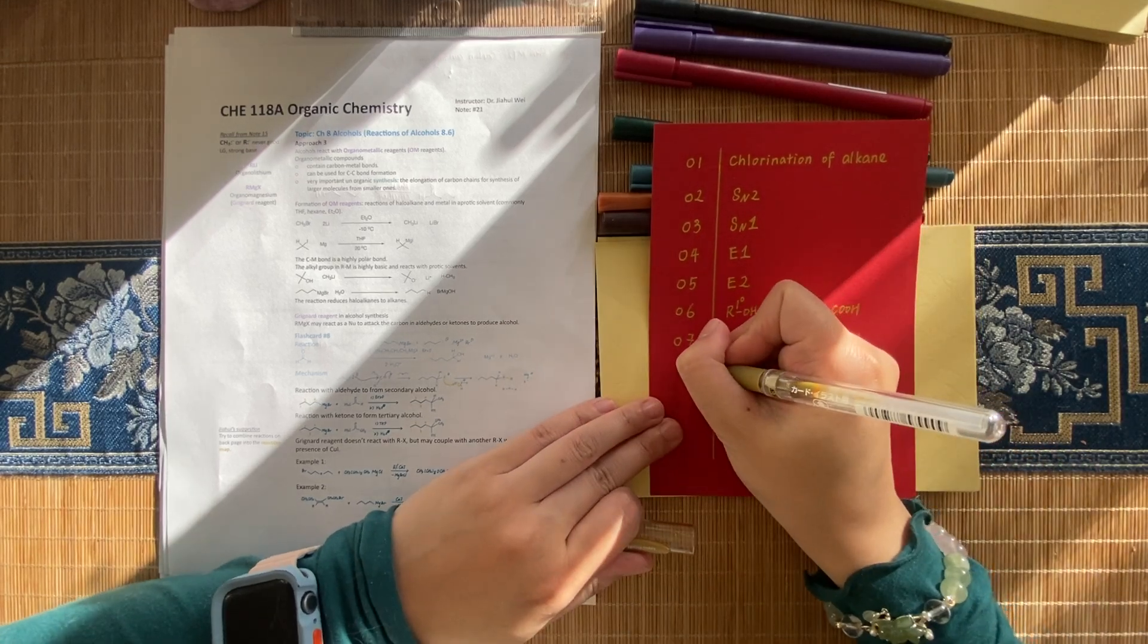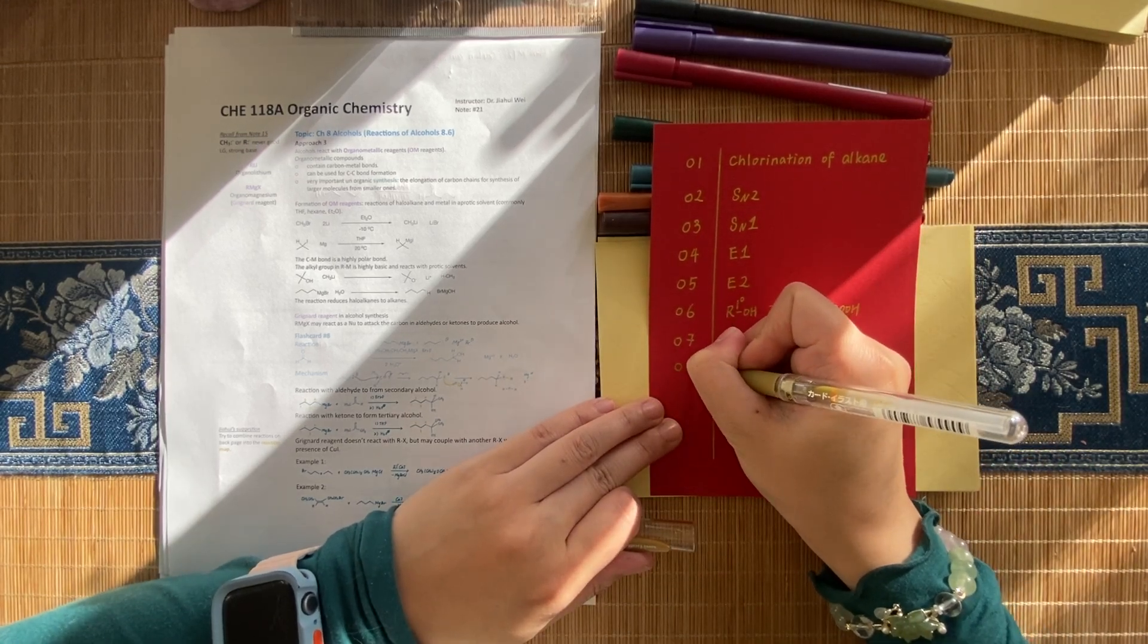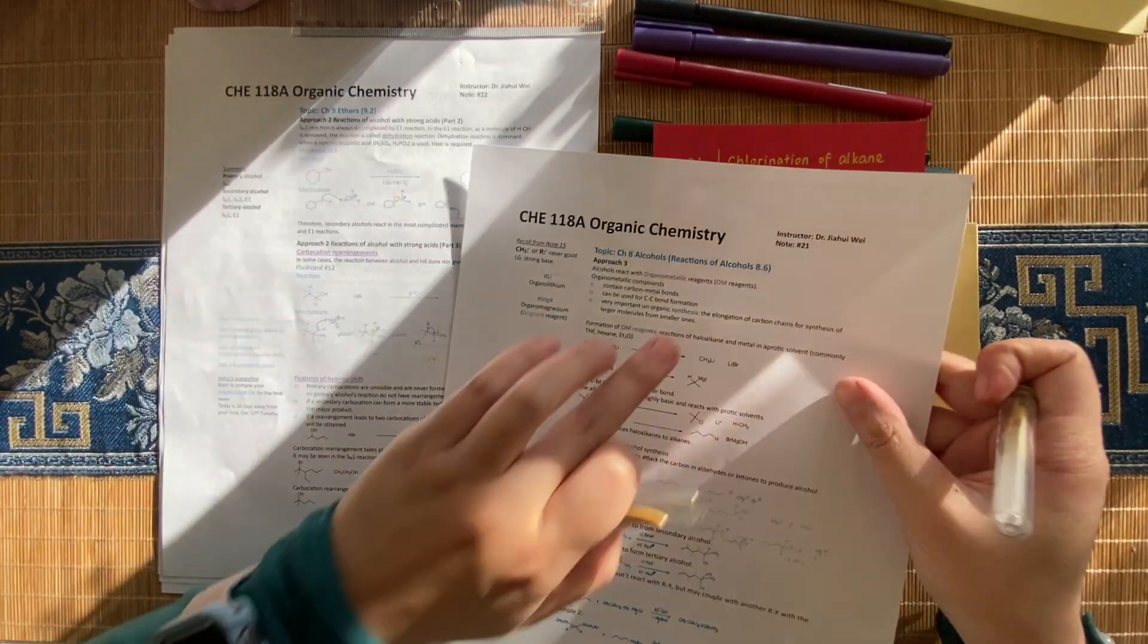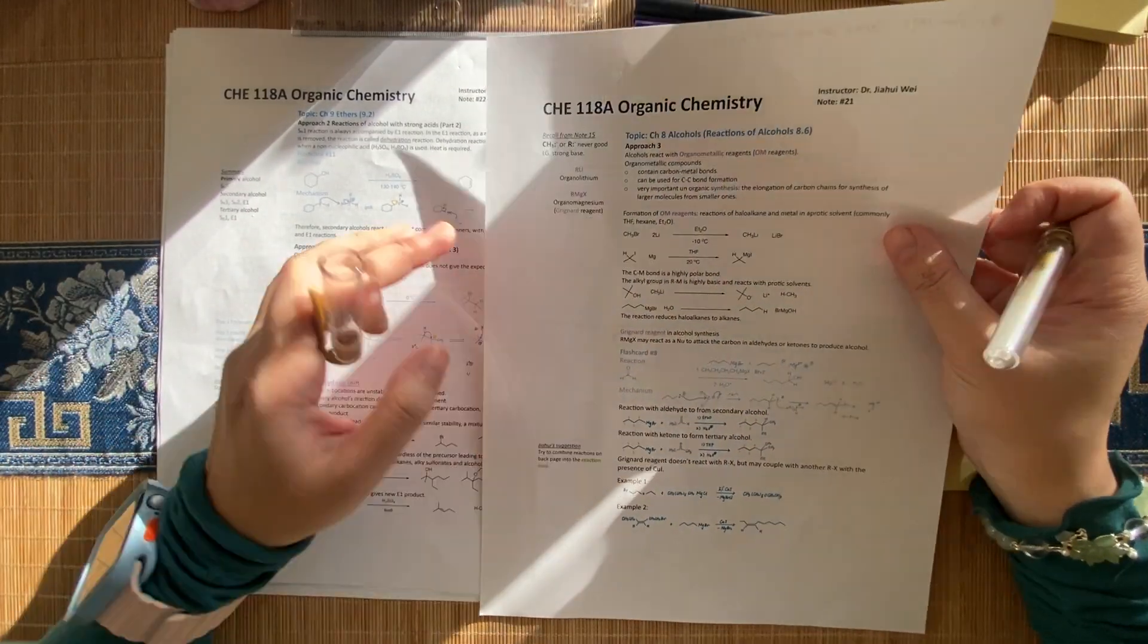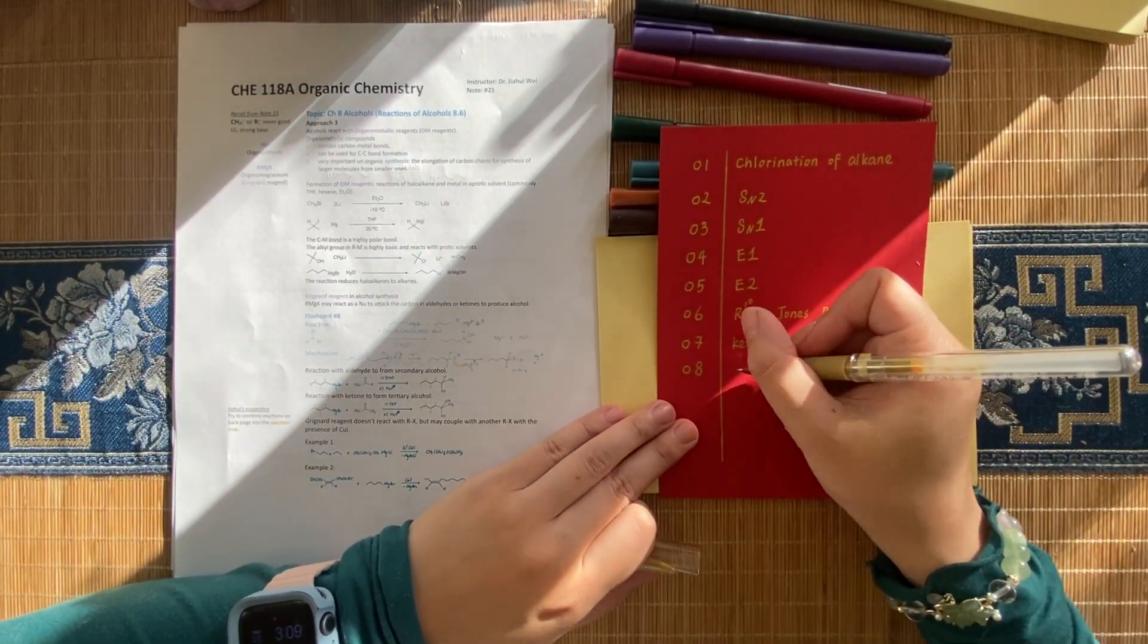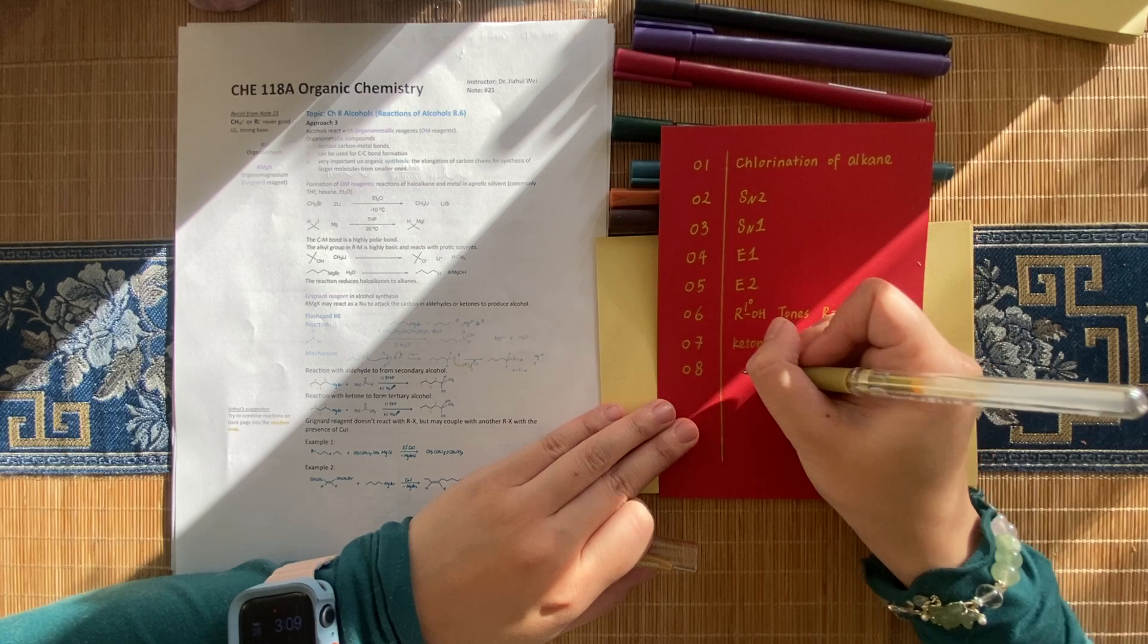All right, we're going to do flashcard number eight. It's on my notes 21. It's flashcard of Grignard. I use aldehyde.